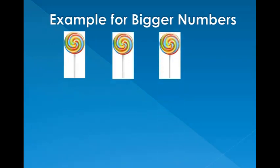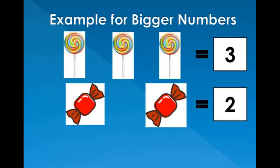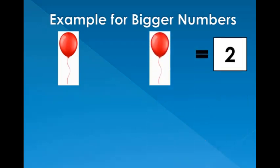1, 2, 3. There are three lollipops. 1, 2. There are two candies. Can you see the number of lollipops are more than the number of candies? Hence the number three is a bigger number. 1, 2. There are two balloons.